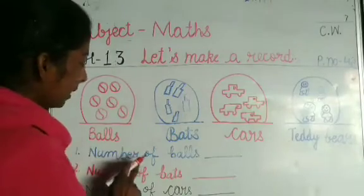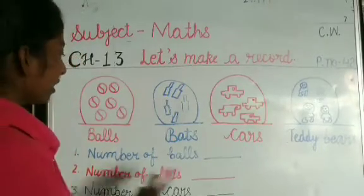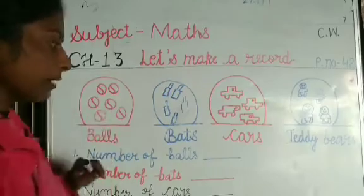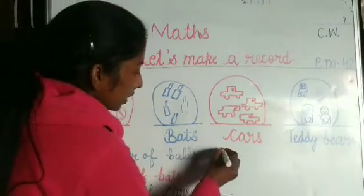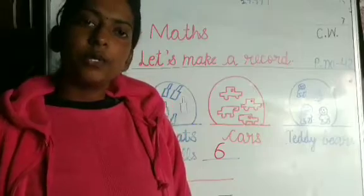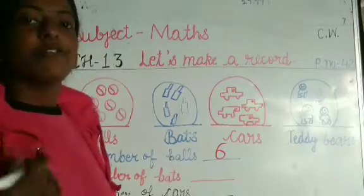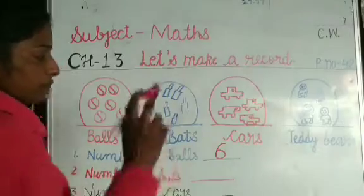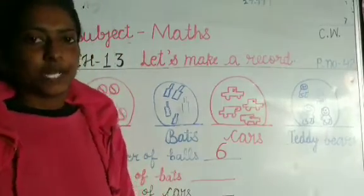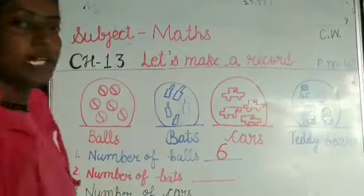Question number one: number of balls. Let's count the balls — one, two, three, four, five, six. So there are total six balls. Whenever you are doing maths work, you have to prefer numbers instead of number names. Unless it is specially asked to write number names, always write numbers. So here write 6, not 'SIX'.